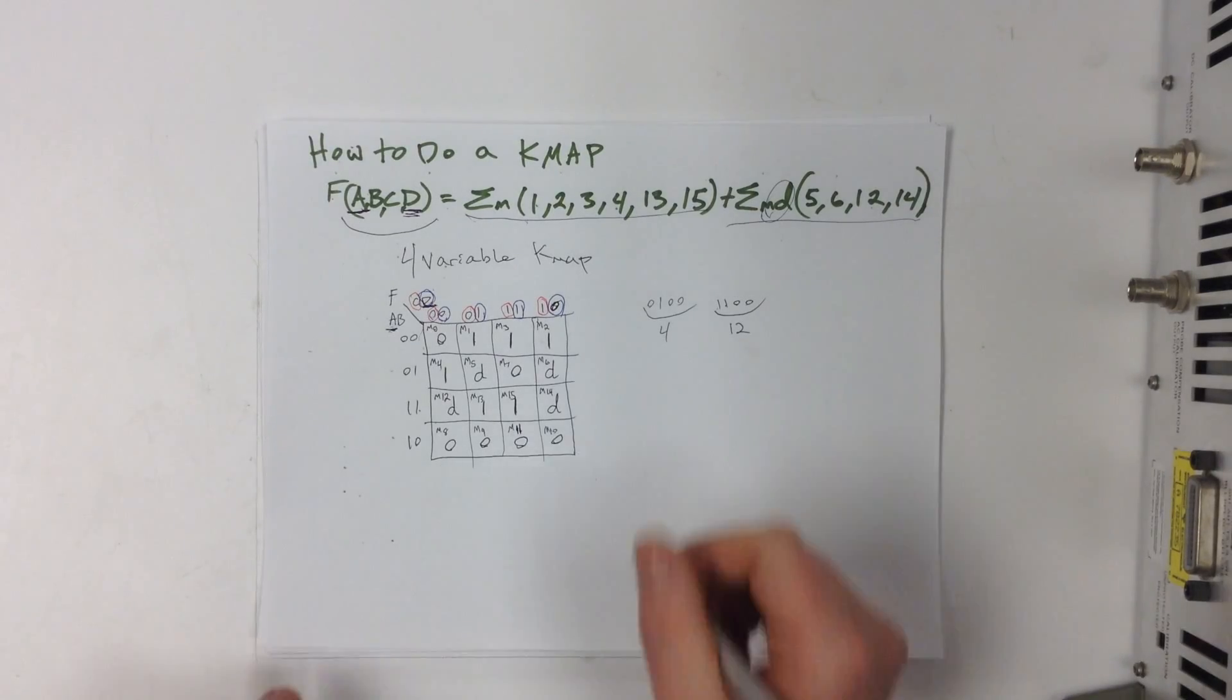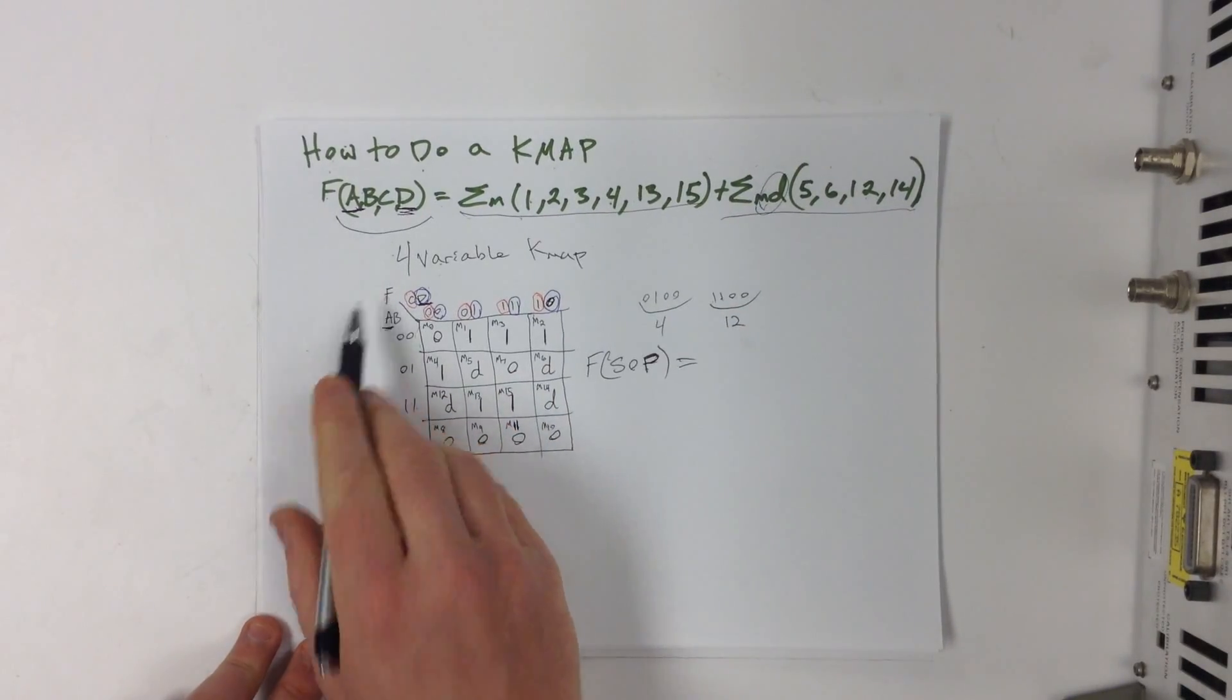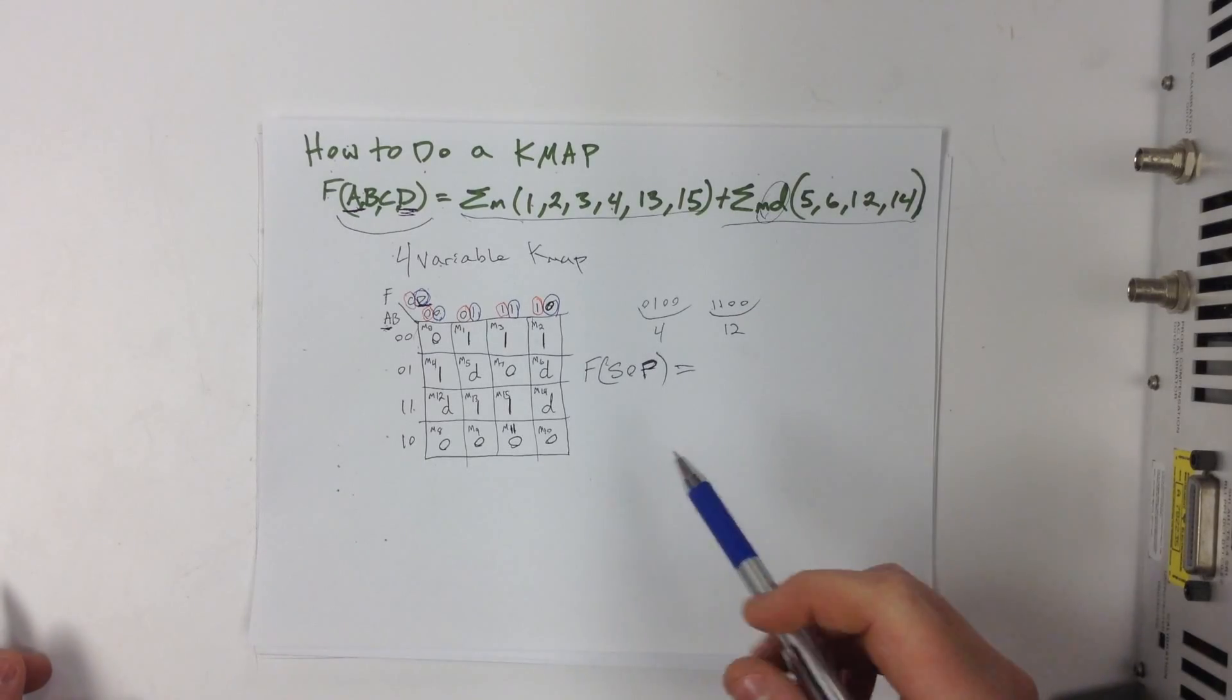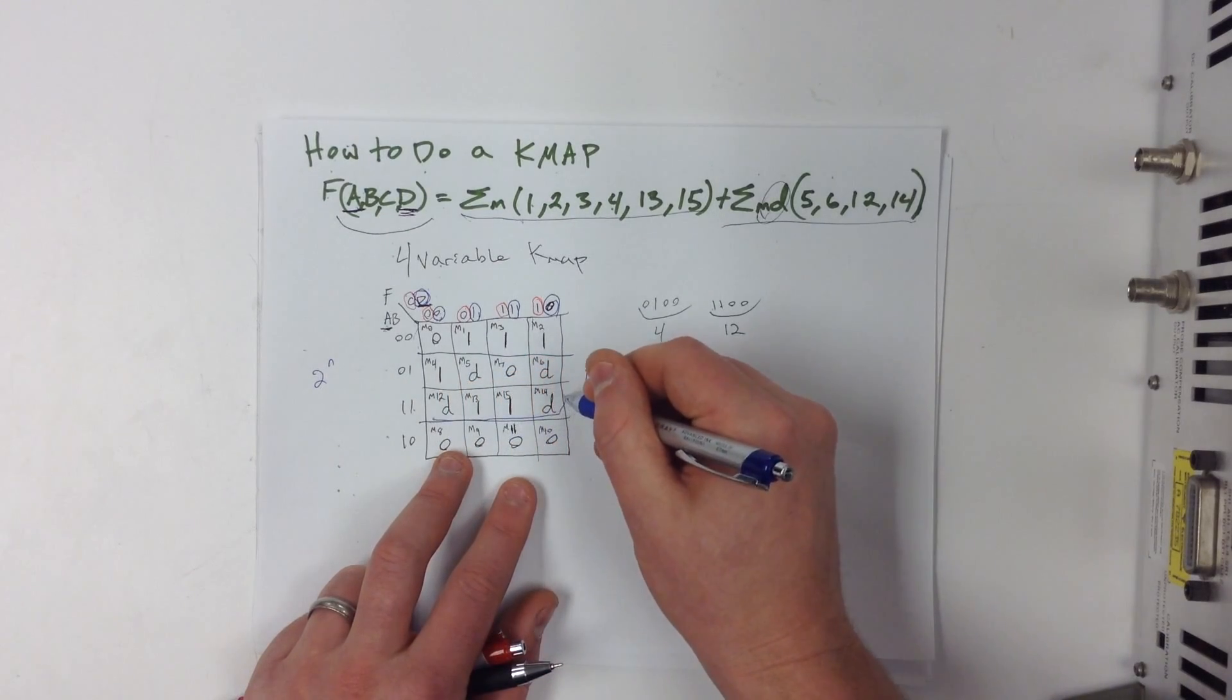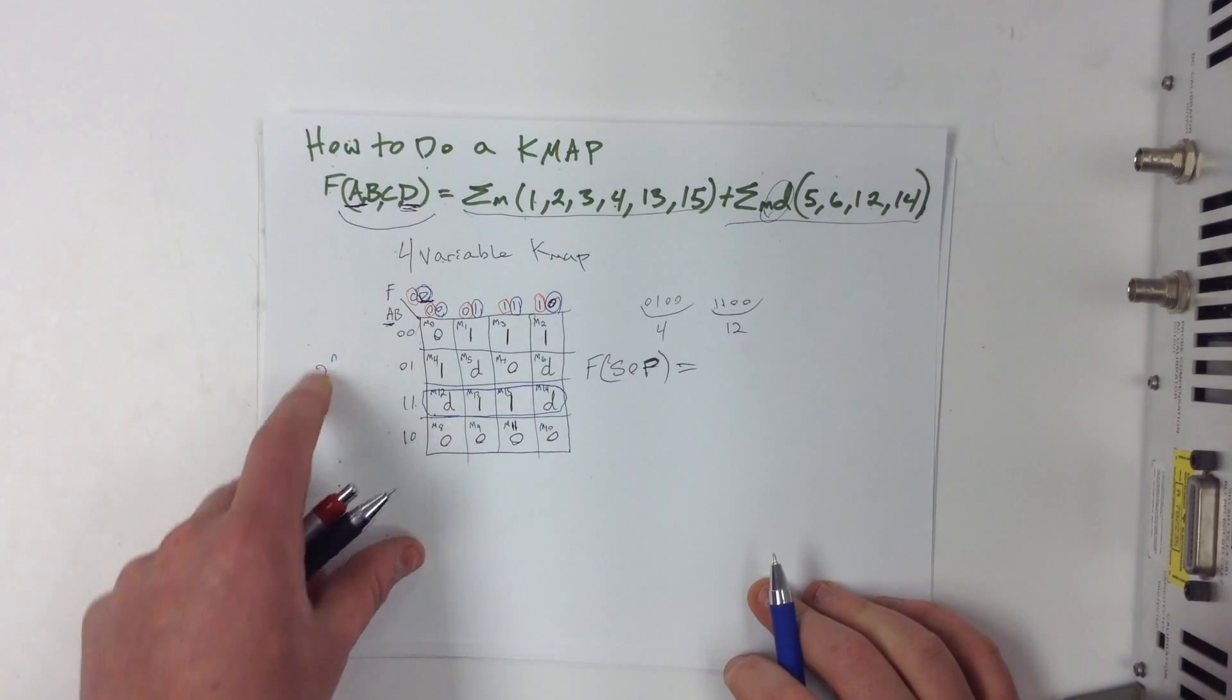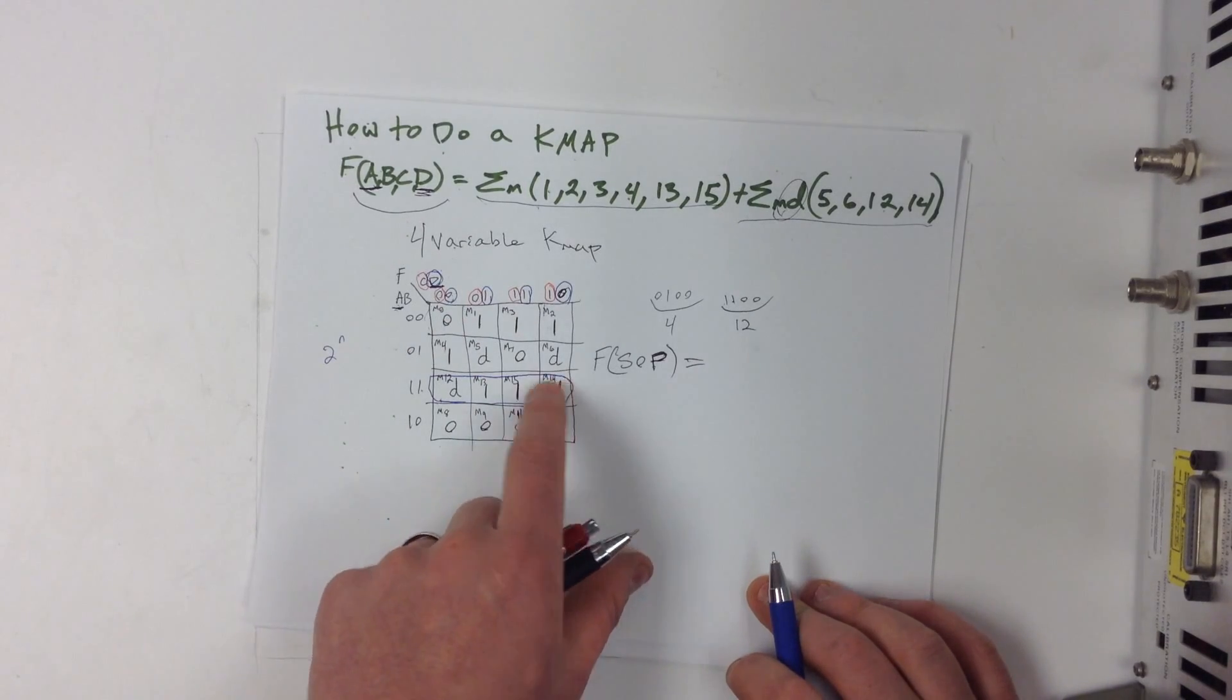And what I want to do is I want to show you how to find sum of products, which is abbreviated SOP. And we're going to go ahead and find that for F, our function F. So with sum of products, all we want to do is we want to group the 1's, which is pretty easily done. The only trick to this is you have to group it in quantities of 2 to the n. So make sure that you always group in quantities of 2 to the n. Now we don't want to group any of these 0's though. We don't want to get those grouped in. And we only want cells that are adjacent to each other.